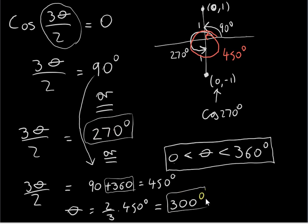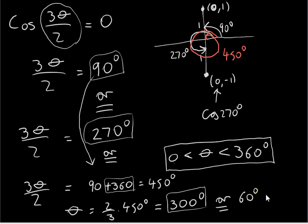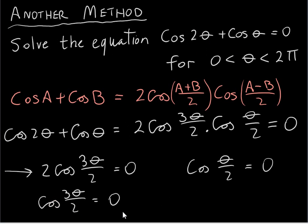So from cos(3θ/2) = 0, we have three solutions. From 3θ/2 = 90: θ = 2/3 × 90 = 60 degrees. From 3θ/2 = 270: θ = 2/3 × 270 = 180 degrees. And from 3θ/2 = 450: θ = 300 degrees. Now we have to look at the second factor, cos(θ/2) = 0.